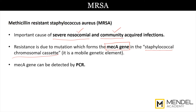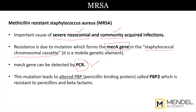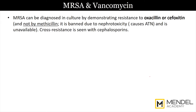We can detect the MEKA gene by polymerase chain reaction, which is the most diagnostic and most effective way of diagnosing it. This mutation leads to an altered penicillin-binding protein called PBP2, which is resistant to penicillins as well as beta-lactams. MRSA can also be diagnosed in the regular laboratory if you do not have access to PCR, by simply demonstrating resistance to oxacillin or cefoxitin.